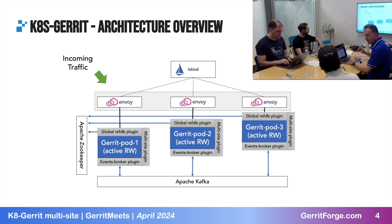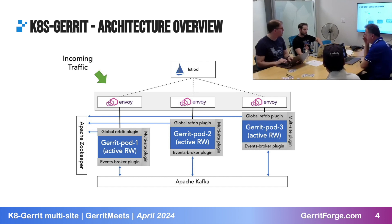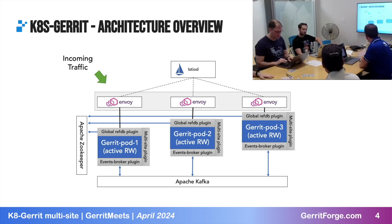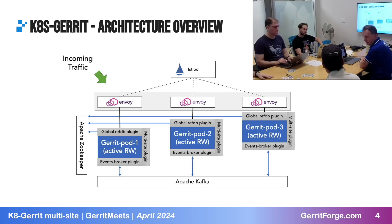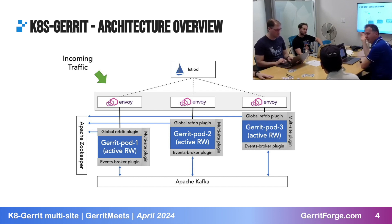k8s-gerrit uses Istio out of the box. If you want to use something else — I believe folks from Palo Alto Networks did an equivalent integration for Ambassador — you're free to do it. k8s-gerrit doesn't force you to use Istio, but if you want to use it, it's there.